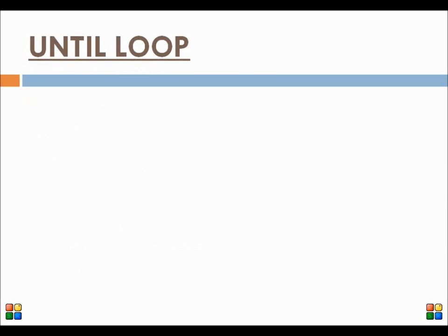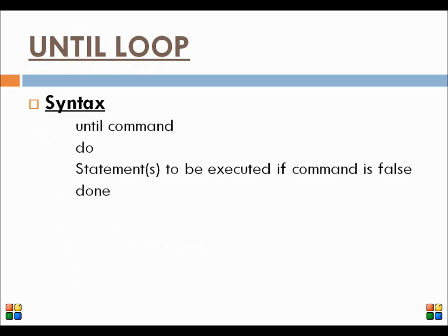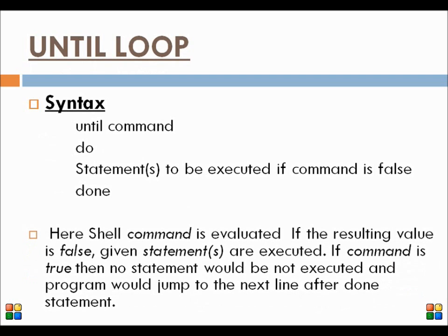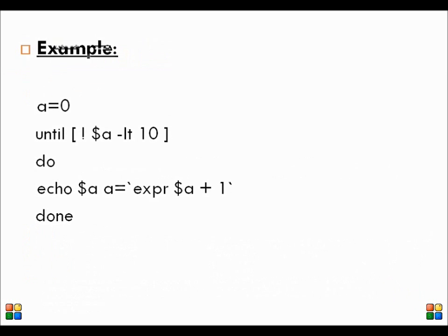The next loop is the until loop. Until loop is the negation of while loop — until a command is false, the set of statements will be executed. In this example, a is 0. Until the negation of $a less than 10, the value of $a will be printed and the value of a will be incremented. Once the value of a becomes 10, 10 less than 10 evaluates to false, so the negation is true and the loop will not be executed. The output is 0, 1, 2, 3, 4, 5, 6, 7, 8, 9.